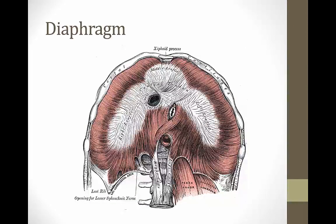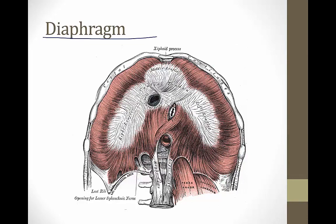The diaphragm is the most important muscle for breathing. When you take in a breath, it contracts and both sides move down toward the abdomen to pull air into the lungs. There are three major openings that allow thoracic structures to reach the abdomen. The first is the caval foramen, where the inferior vena cava passes through.